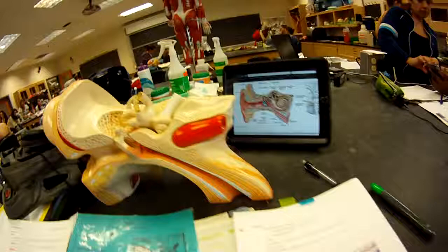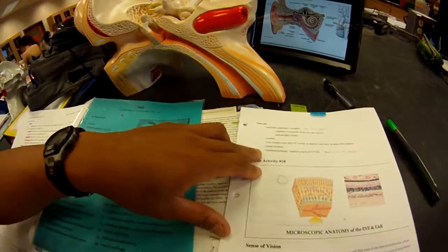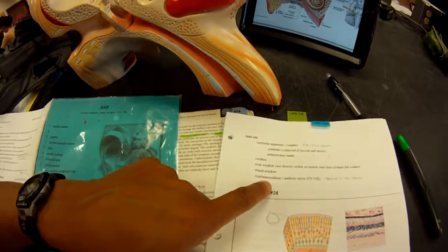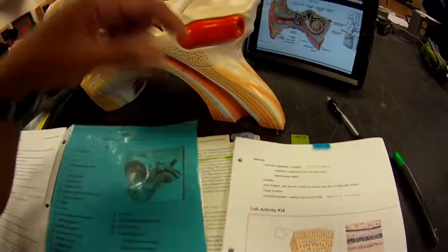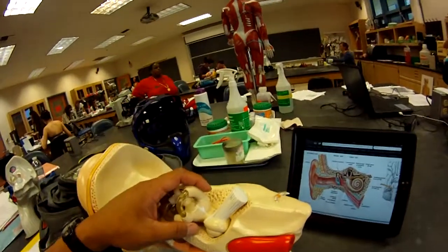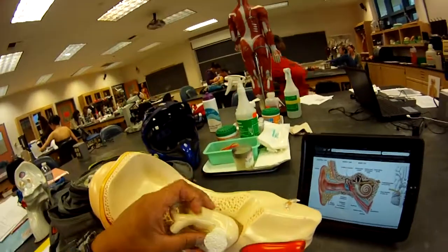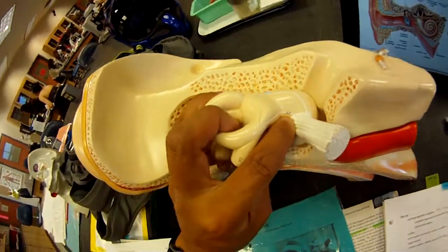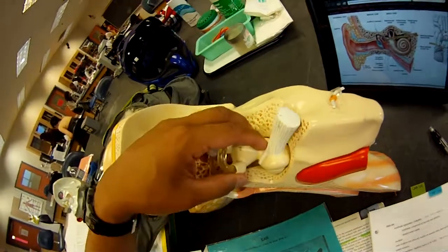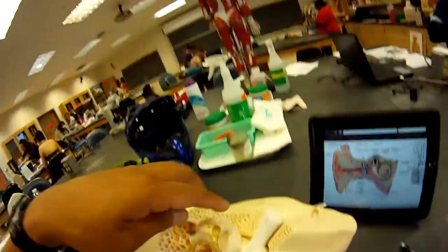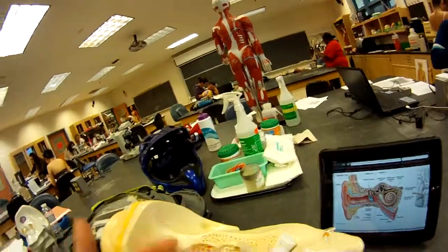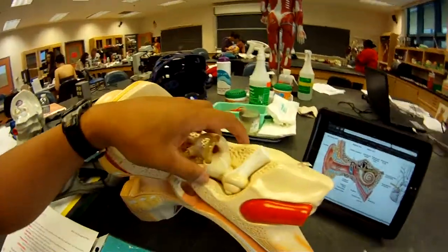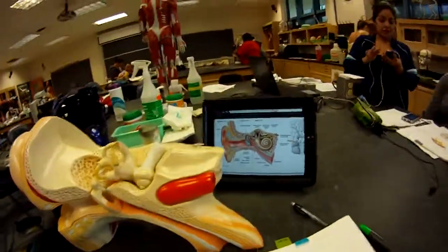And that is all about the ear. Oh, one more: the vestibulocochlear auditory nerve. That's pretty much on the cochlea, but this is it right there where you see number 32. It's on the posterior since this is the right ear inside the inner ear. All right, there you go.